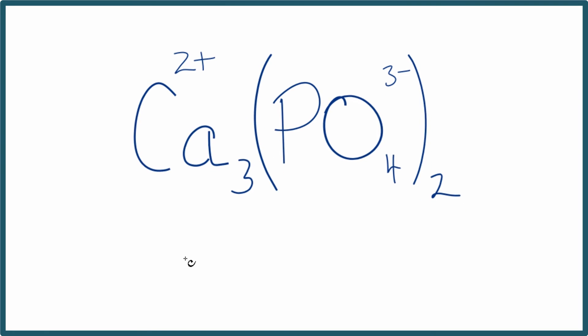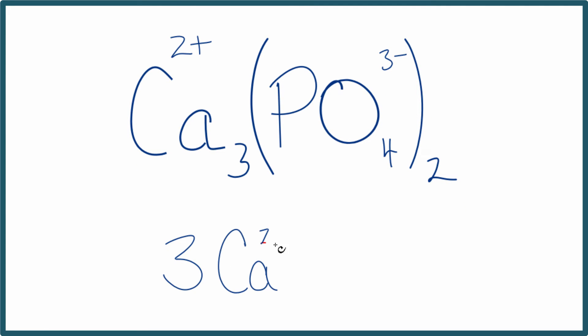So we have three calcium ions, and each one is two plus. And we have two of these phosphate ions, PO₄, and the whole phosphate ion is three minus.